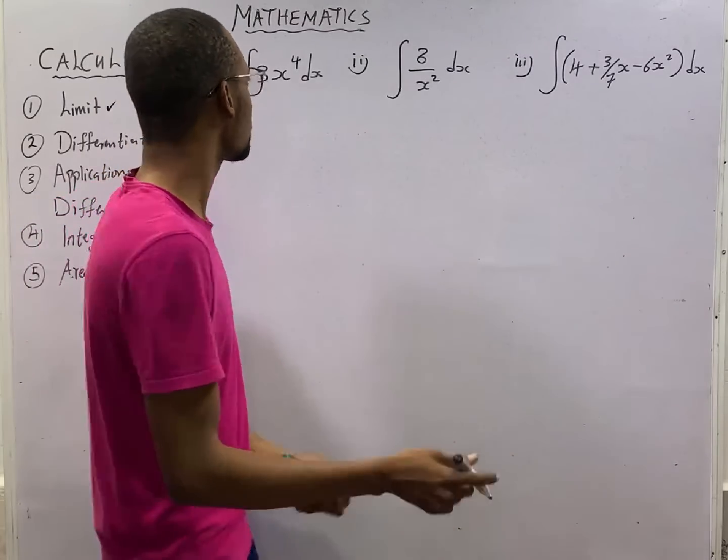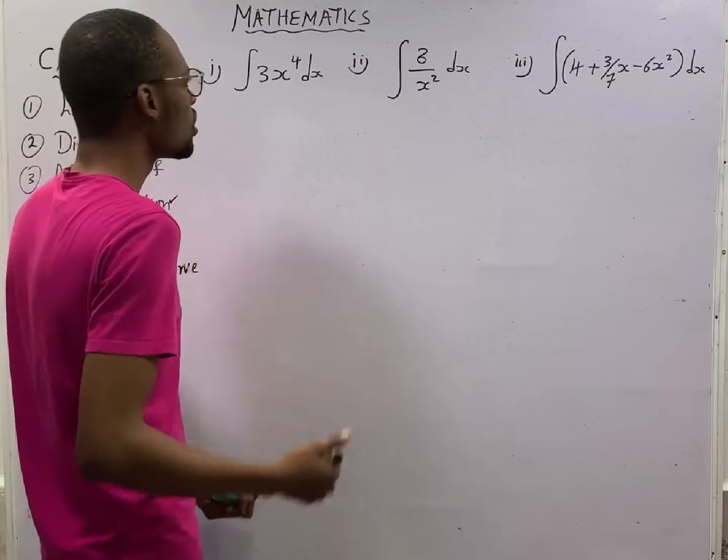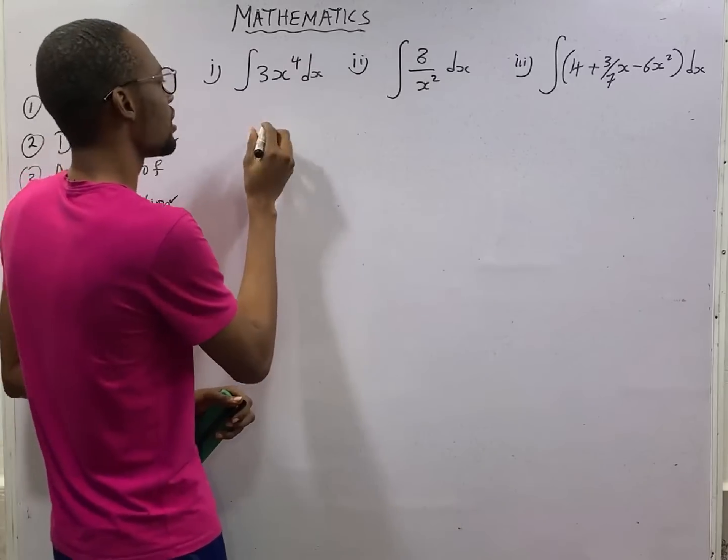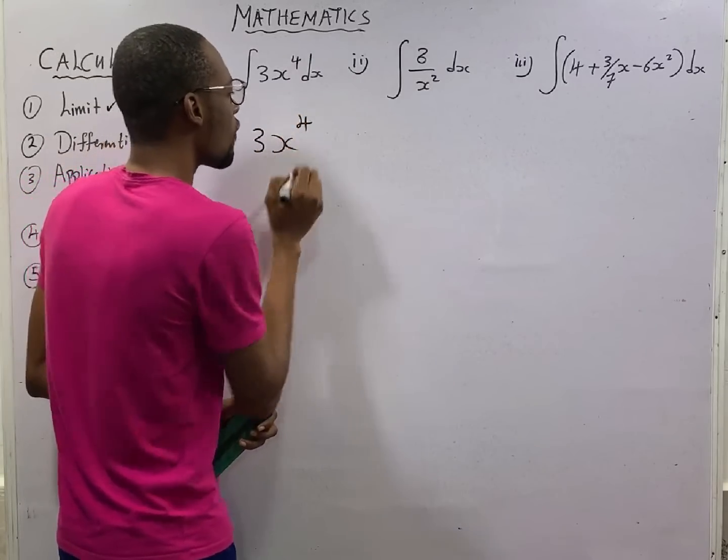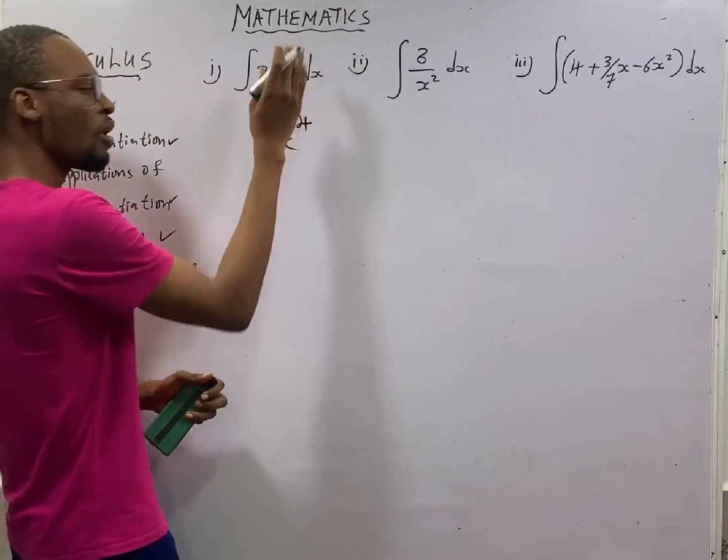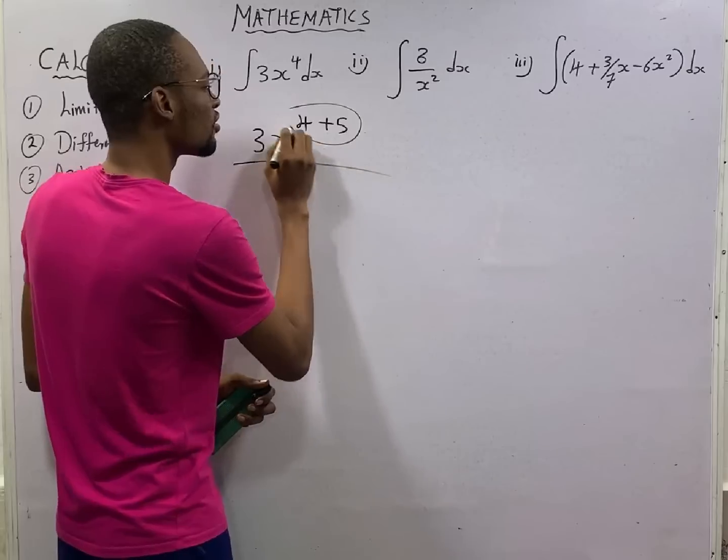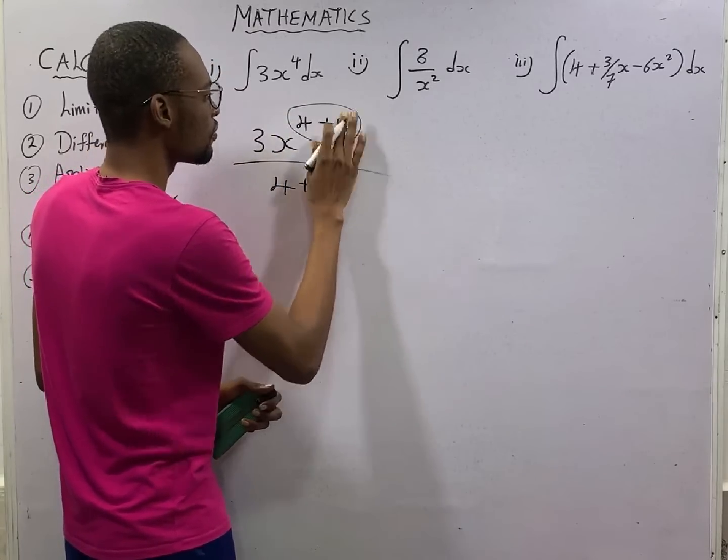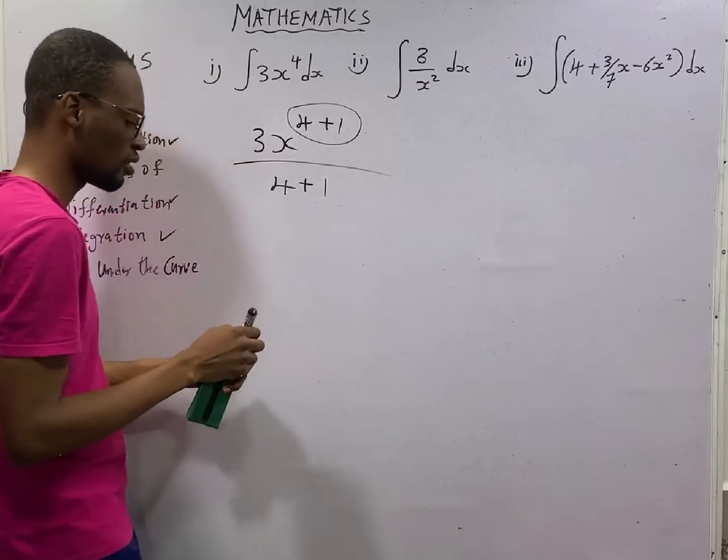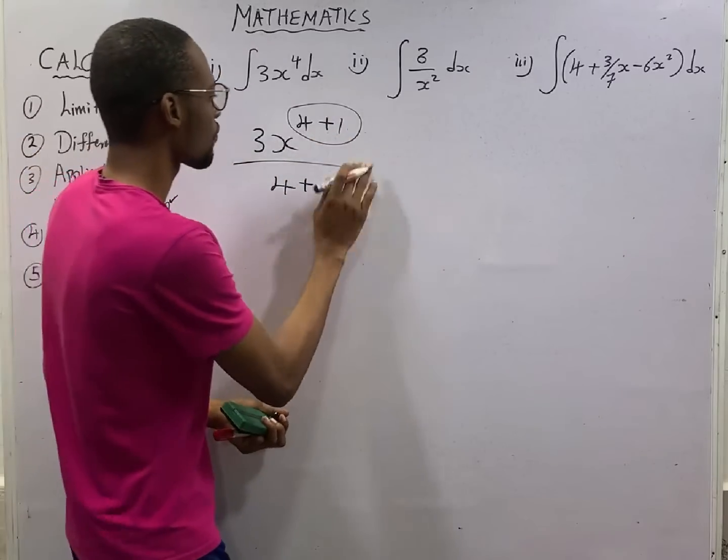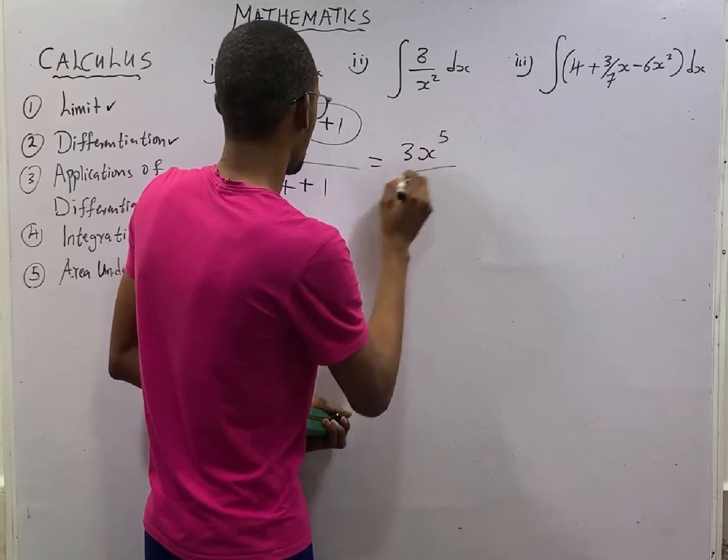In this case, if I say, given this function, a constant is integral. You simply tell me that this is 3s raised to the power of 4. You add one to the power. 4 plus 1. Then you divide by everything here, 4 plus 1.